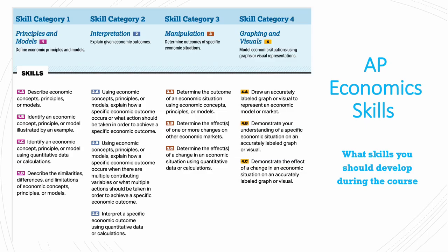Throughout this course, you would develop certain AP economic skills. The first skill category would be to define economic principles and models and identify an economic concept, principle, and model using an example and using quantitative data or calculations, and to describe similarities, differences, and limitations of economic concepts, principles, and models.